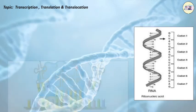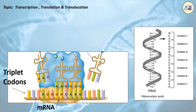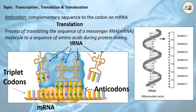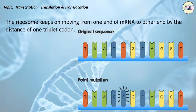Translation: Each mRNA is made up of thousands of triplet codons. As per the message on mRNA, amino acids are supplied by tRNA. For this purpose, tRNA has anticodons having a complementary sequence to the codon on mRNA. This is called Translation — the process of translating the sequence of an mRNA molecule to a sequence of amino acids during protein synthesis. The ribosome keeps moving from one end of mRNA to the other end by the distance of one triplet codon.